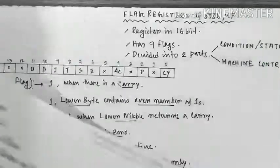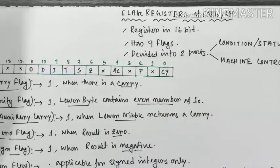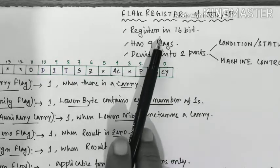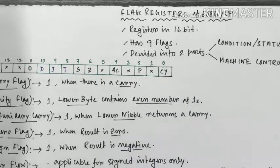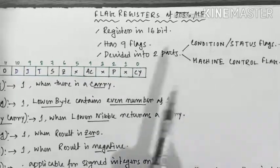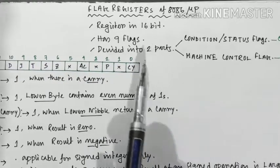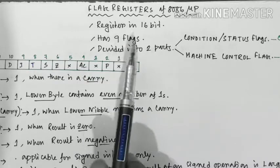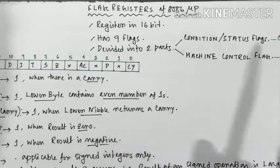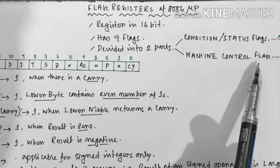Today we are going to explain the flag register. Just like all the registers in 8086, the flag register is also a 16-bit register. The first difference with respect to the 8085 is that 8086 has nine flags. These nine flags are of two different categories, and that is why they are categorized into two different parts: condition flags (or status flags) and machine control flags.